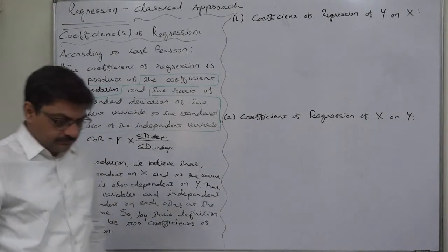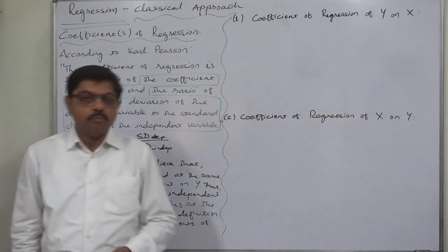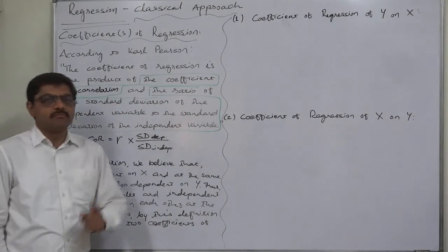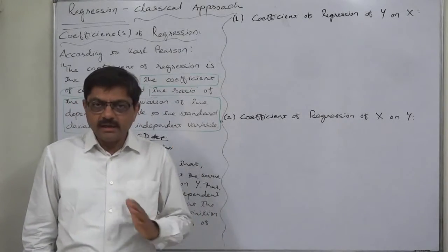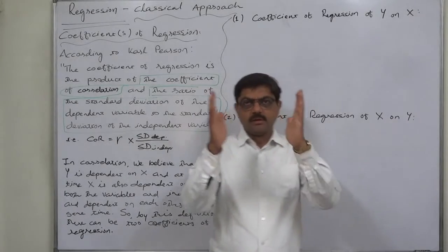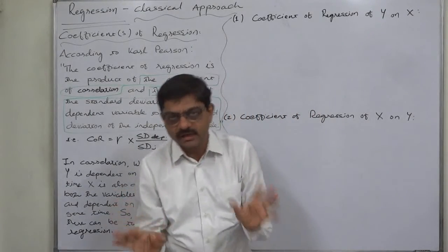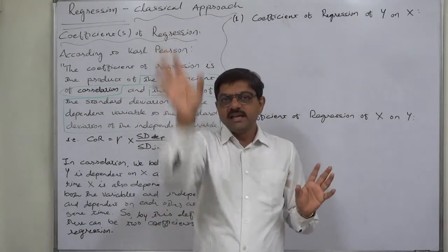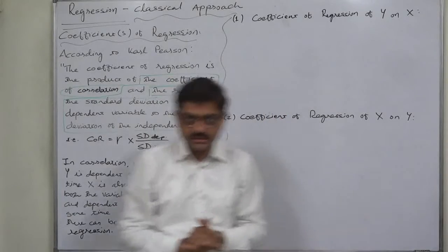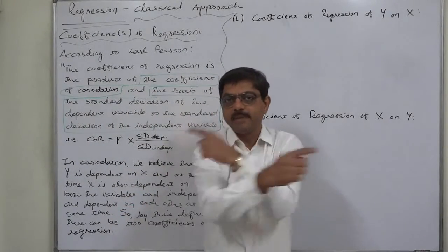Now, in correlation, we believe — I don't prefer to use the word assume — we believe that both the variables are dependent on each other at the same time. That means both variables X and Y are independent as well as dependent on each other simultaneously. So in correlation, we believe that the change in the values of one variable is because of the change in the value of another variable. Change in value of X is because of change in value of Y, and at the same time, change in value of Y is because of change in value of X. That kind of relationship is known as correlation.